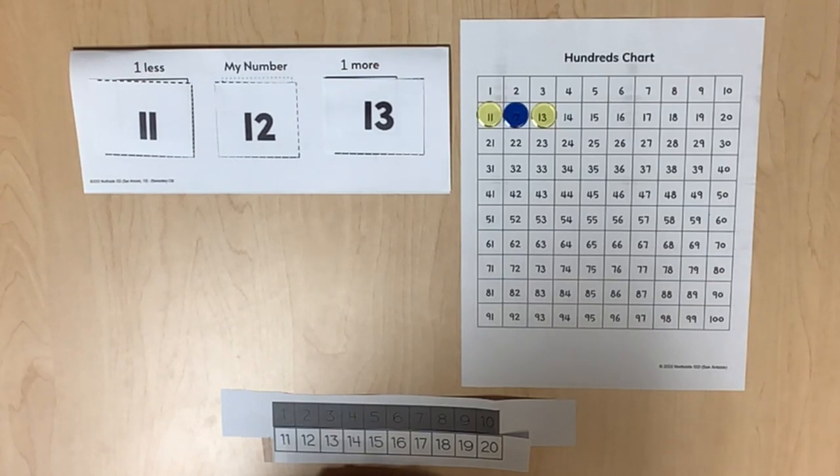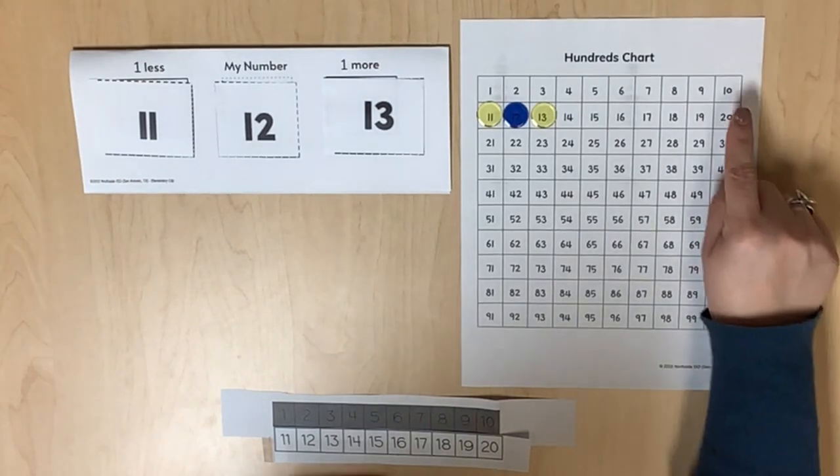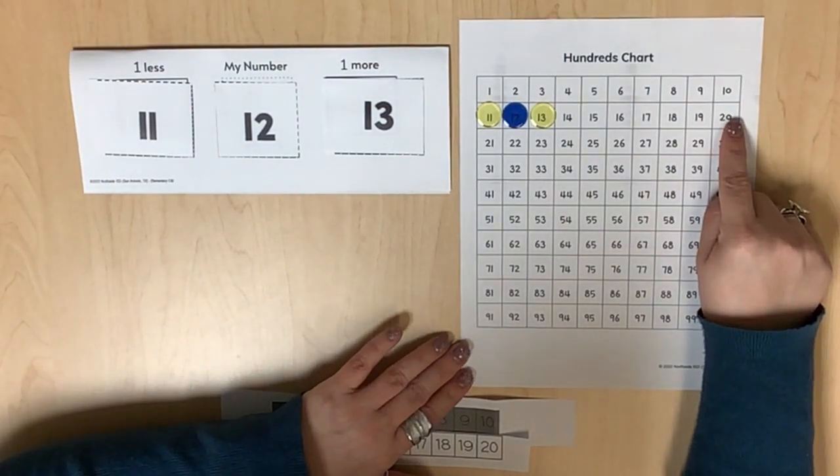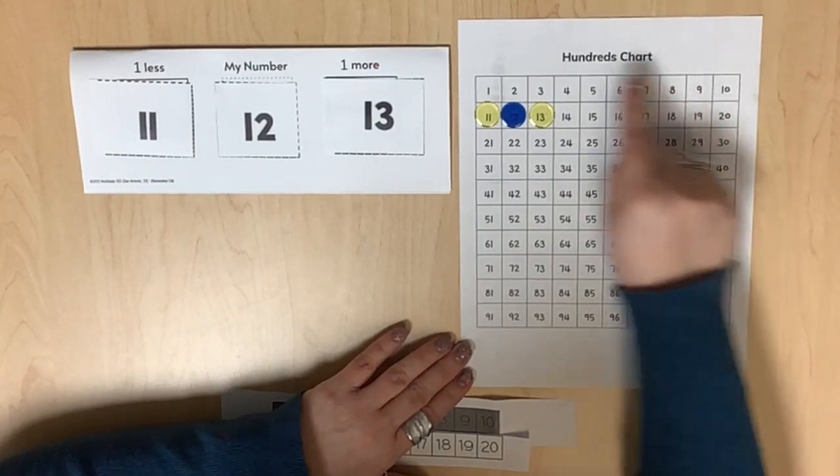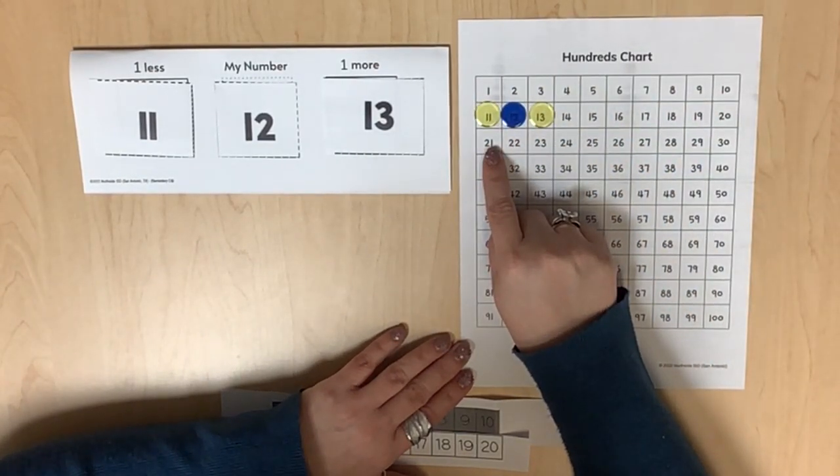Utilize the hundreds chart to support counting forward and backward by ones. Point out to students that when we get to 10 or 20 on the hundreds chart, the next number in the counting sequence starts on the next row.